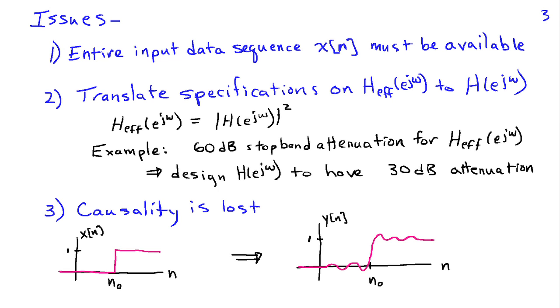And then finally, this procedure, of course, loses the idea of causality, which is okay, although you should be aware of it in cases where it might matter. So for example, if there's some transient effect that starts at time n₀, we can think of a causal response to such a transient would not be possible to begin until after n₀.